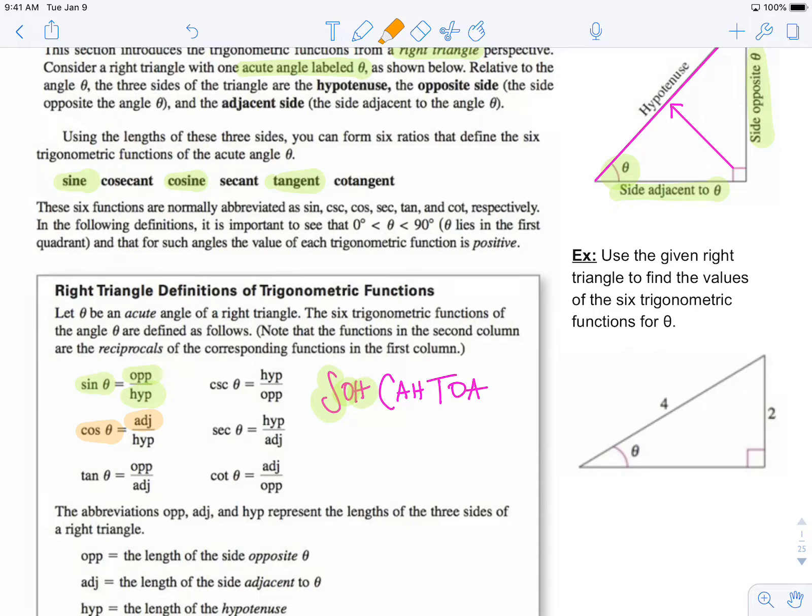Cosine is adjacent over hypotenuse, and tangent is opposite over adjacent.